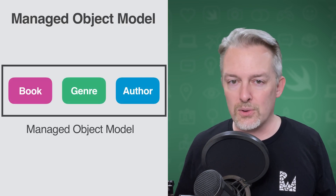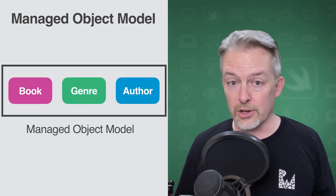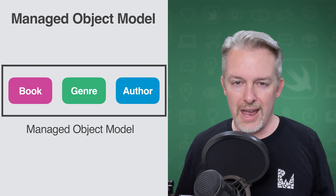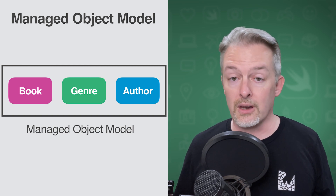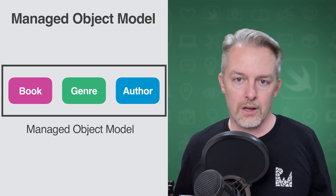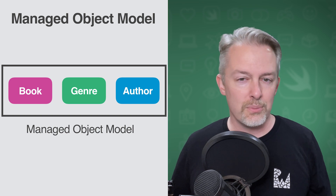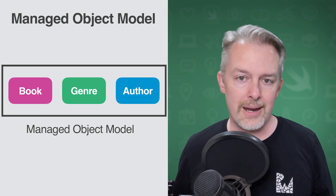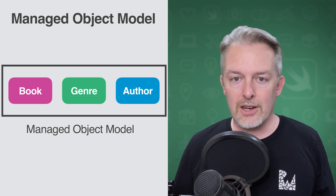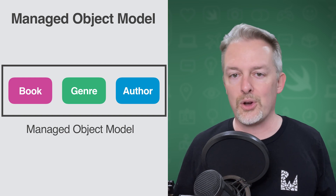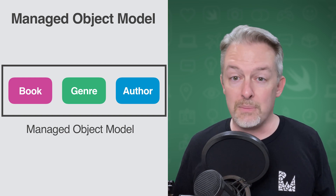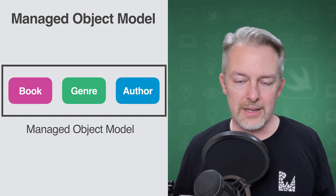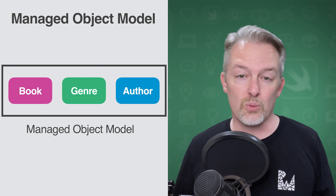Let's look at the hypothetical example introduced earlier — an app to record the books you're reading. In this case, you would have a separate entity to represent a Book, Author, and Genre. All the managed objects together comprise the managed object model, which is the object graph manager — the manager aspect of Core Data. Defining the managed object model is the first part of working with a Core Data stack, and the better you define it, the easier it is to work with these objects, as Core Data can provide some rich support.